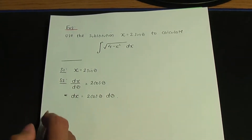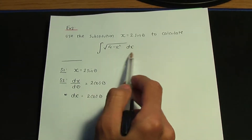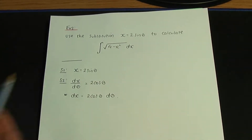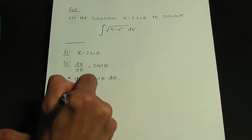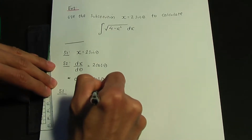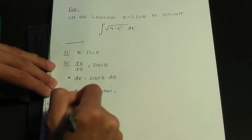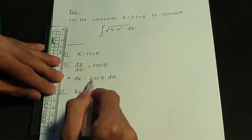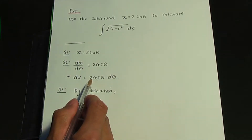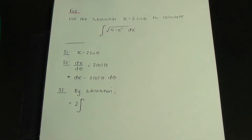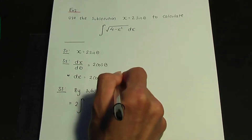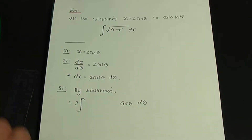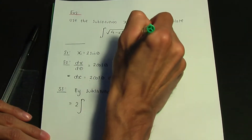This is where we stop and think, because in our integral we're going to replace dx by 2 cos theta d theta, and x will be replaced by 2 sin theta. That takes us to step number three. By substitution, let's rewrite the integral. dx is 2 cos theta d theta, so I'm going to write that 2 as a constant outside the integral, keeping cos theta d theta inside. You can only take constants outside the integral.